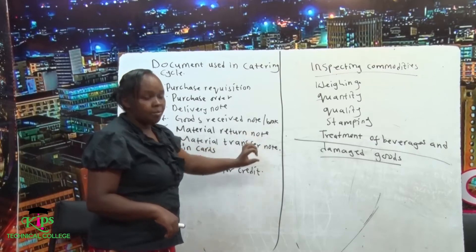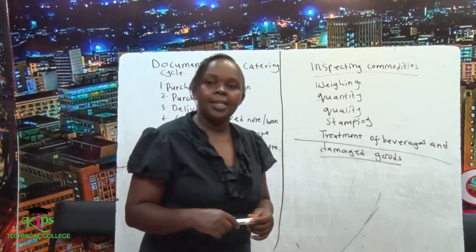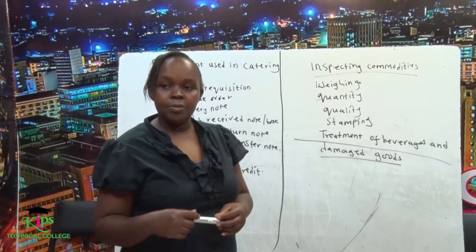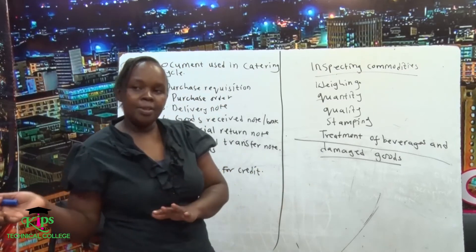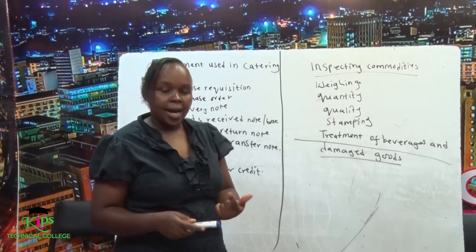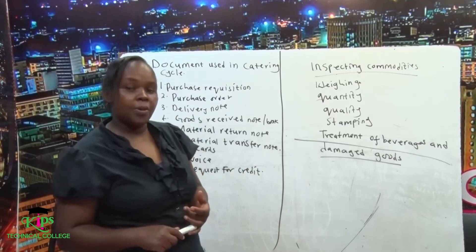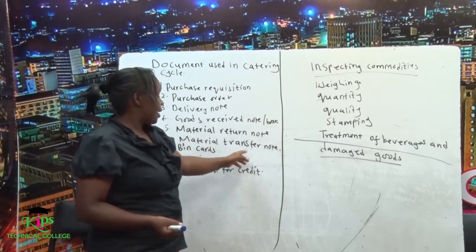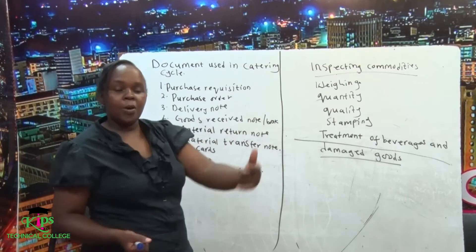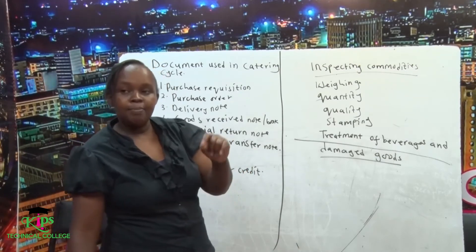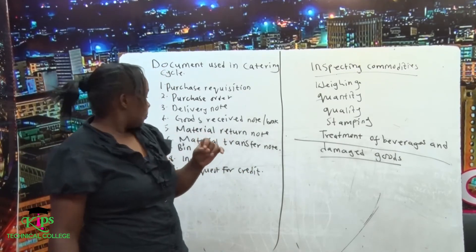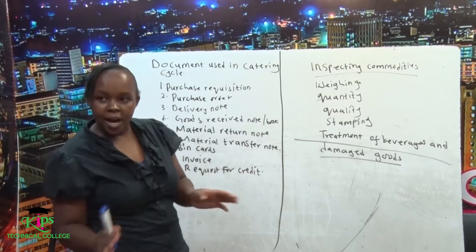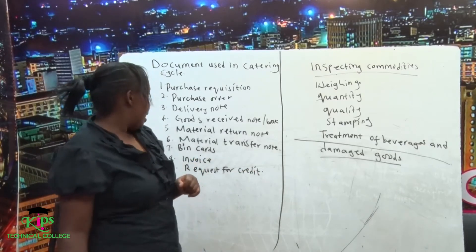Material transfer note is another document. This is where you have excess. For example, in food and beverage, in the beverage department we might be needing wine and we do not request for it directly but go to the beverage. We request for a beverage, so they need to write a material transfer note for the food department to be accredited. We don't give it without a document — it has to be accompanied by a document.